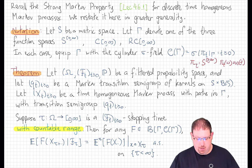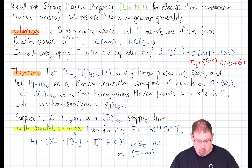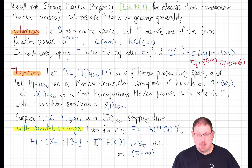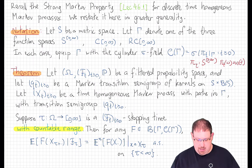Here's the theorem. We start with a filtered probability space and a fixed Markov transition semigroup on our state space. Let x_t be a time-homogeneous Markov process with paths in one of our three path spaces, whose transition semigroup is the given q_t. Remember that process is really a family of processes indexed by the starting distribution. Typically we start it at a deterministic point, so the starting distribution will be a point mass at some x in the state space, although in the theorem we'll also need to start it at a random point.